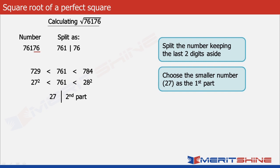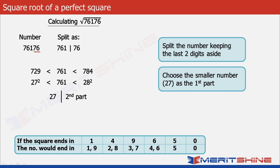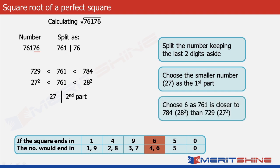Now we move to the second part. Here the square ends in 6, so the number can have either 4 or 6 as its unit digit. Since 761 is closer to 784, we will take the larger of the two choices, which in our case is 6. Now clubbing these two, we can write down our final answer as 276.